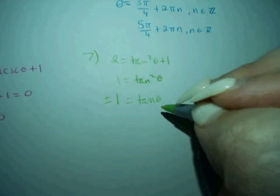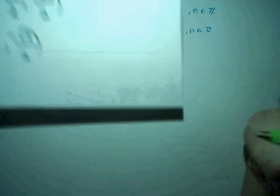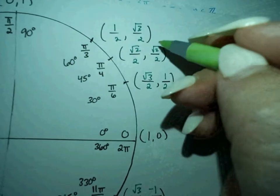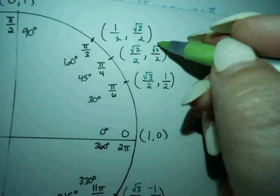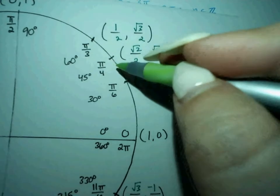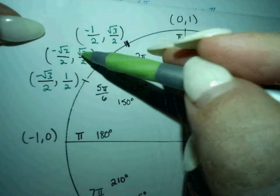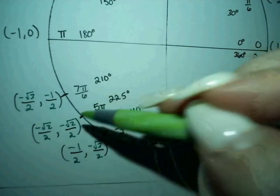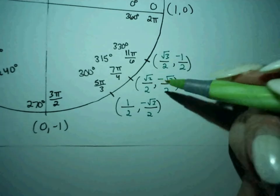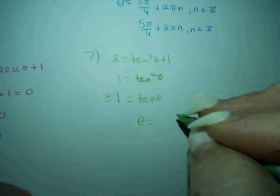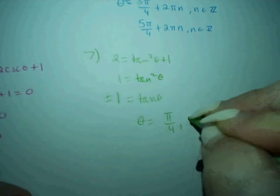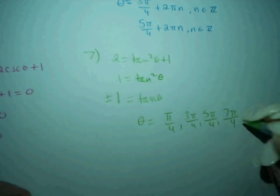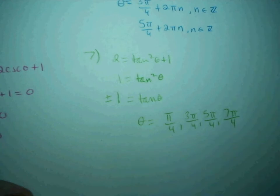We're looking at all answers where tangent is positive 1 and negative 1. Remember, tangent is sine over cosine: square root of 2 over 2 divided by square root of 2 over 2 is 1. At π/4, tangent is 1. At 3π/4, it's negative 1 because it's positive over negative. At 5π/4, it's positive 1 again. And at 7π/4, it's negative 1. So we're looking at all the odd multiples of π/4: π/4, 3π/4, 5π/4, and 7π/4.